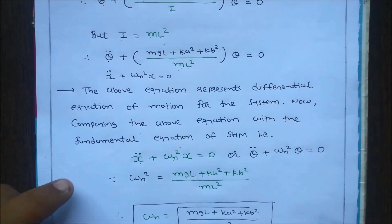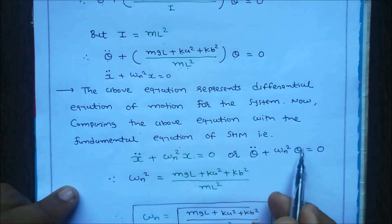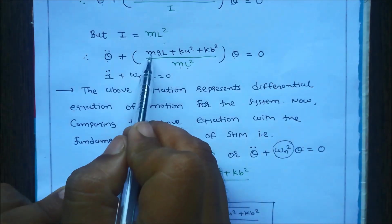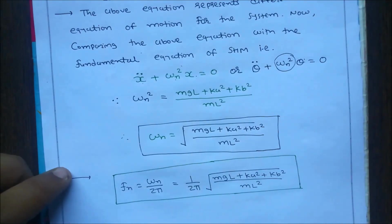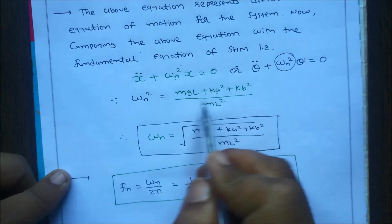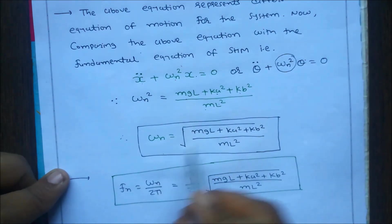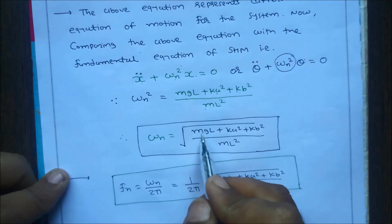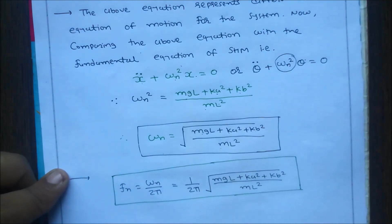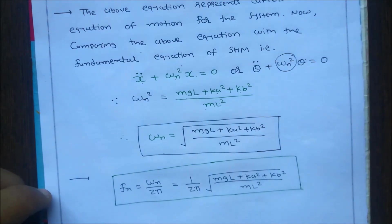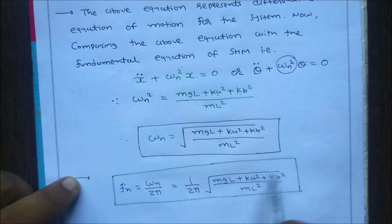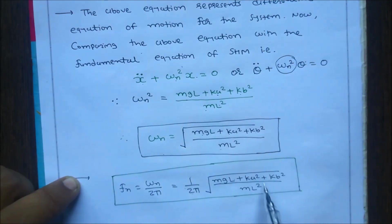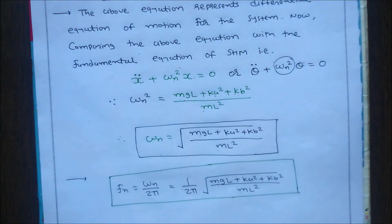Comparing with the SHM equation θ̈ + ωn²·θ = 0, we get: ωn² = (mg·l + k·a² + k·b²)/(m·l²), so ωn = √[(mg·l + k·a² + k·b²)/(m·l²)]. The natural frequency is fn = ωn/(2π) = (1/2π)·√[(mg·l + k·a² + k·b²)/(m·l²)]. In this way we easily solve numericals related to free vibration.